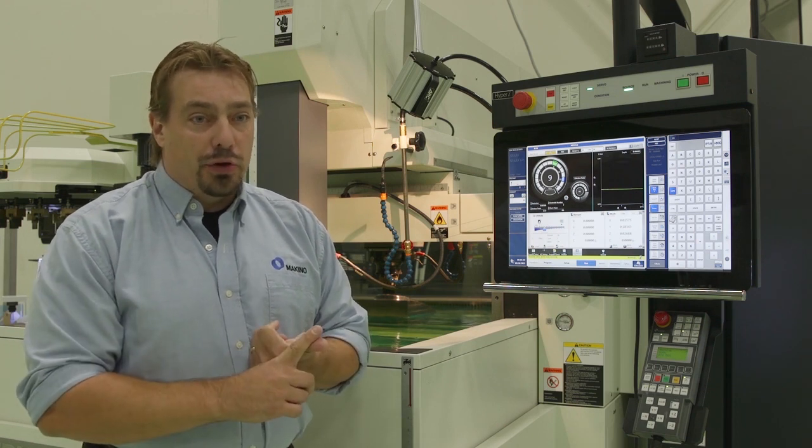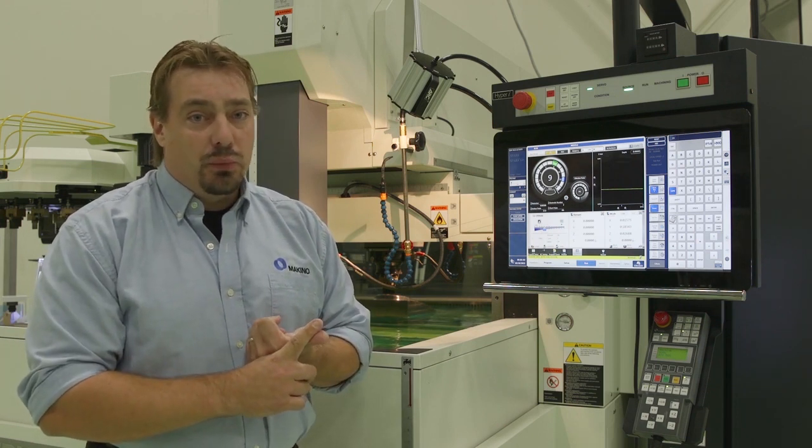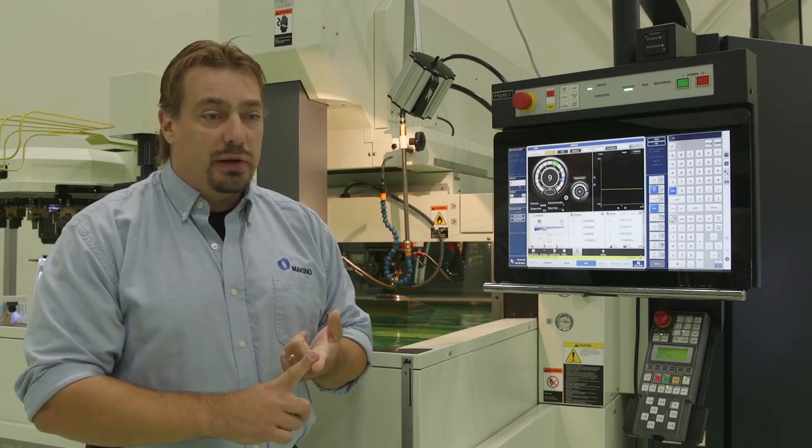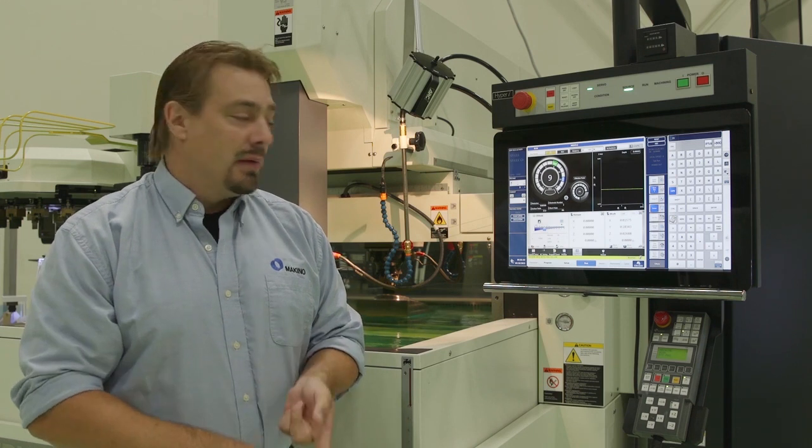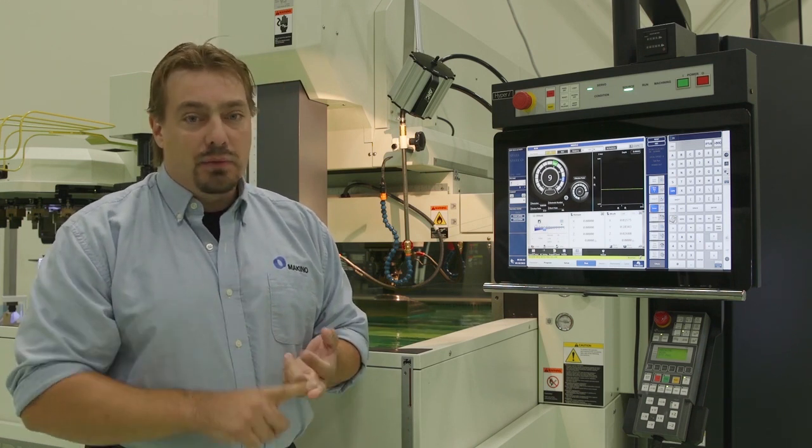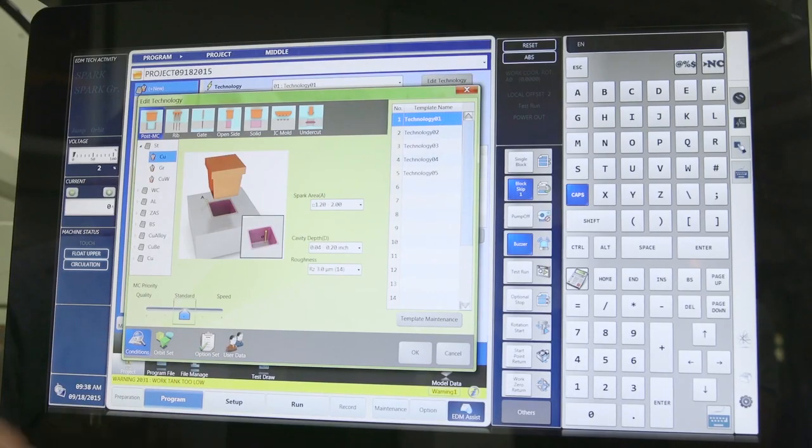So program, here's where you're going to pick your power settings and tell the machine what you want to do. The setup is going to align all of your electrodes and establish all of your work coordinates and locations and run is where you're going to check my program and hit cycle start and begin operation.